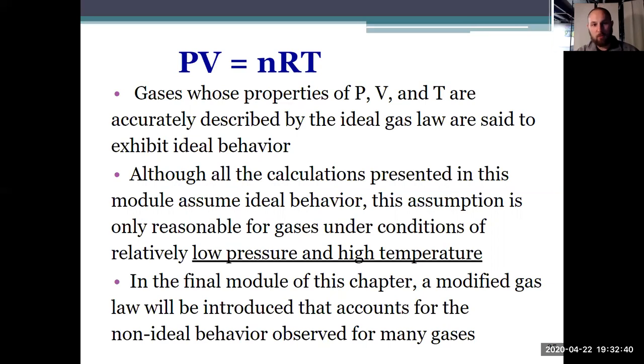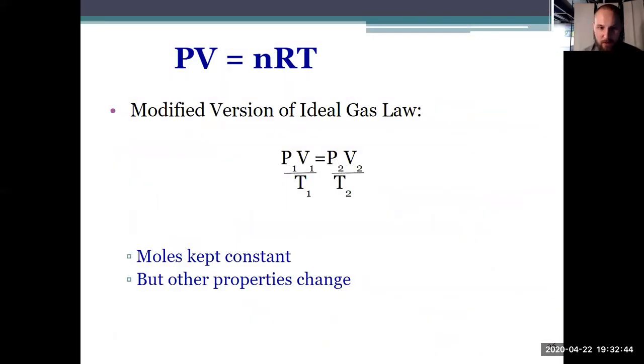Right now, we're just thinking about equation one, PV equals nRT, and equation two, the modified version of the ideal gas law, which is a combination of the Ammonton, Boyle, and Charles law. If moles are kept constant, so the amount of a gas doesn't change, then I can relate the initial pressure, volume, and temperature with the subscript one, that means the initial amount, to the final amount with the subscript two: P2, V2, and T2.